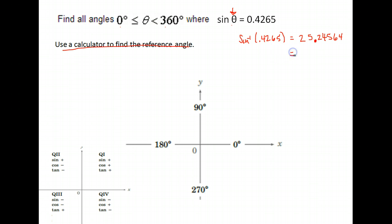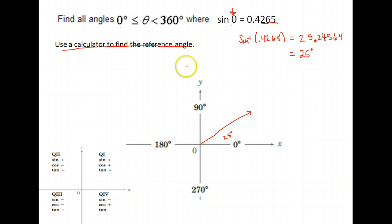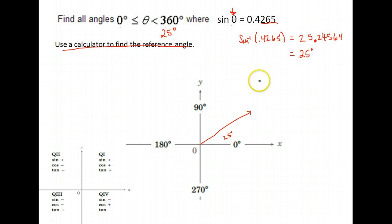I'm going to round to the nearest degree, so it's a 25 degree angle. A 25 degree angle has a sine of 0.4265. Now, where is that located? In the first quadrant. So one of our answers is 25 degrees. There's also another answer — another place between 0 and 360 that has the same sine. We use the reference angle and our information about where sine is positive and negative.